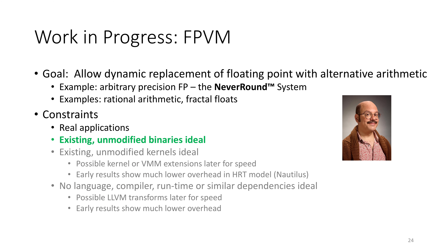In terms of work in progress, we are working on a system we call FPVM. The idea of FPVM is to allow us to dynamically replace floating point with alternative arithmetic — for example, arbitrary precision floating point, which would allow you to avoid rounding entirely if you have enough memory. Other examples would be rational arithmetic, fractal floats, and other alternatives people have discussed. Similar to FPSpy, our goal is to make this something that can slide underneath an existing unmodified application binary.